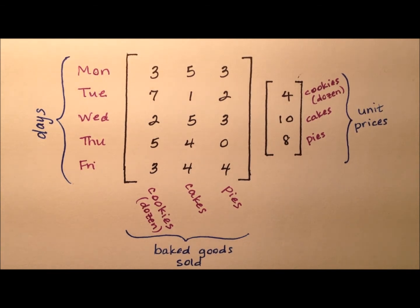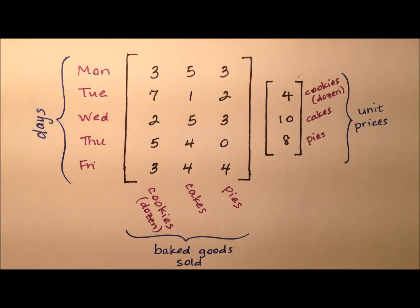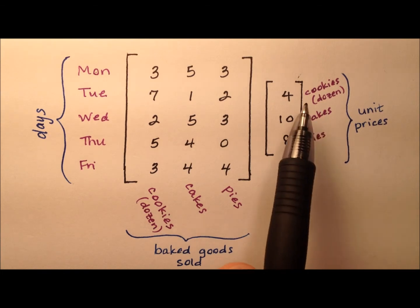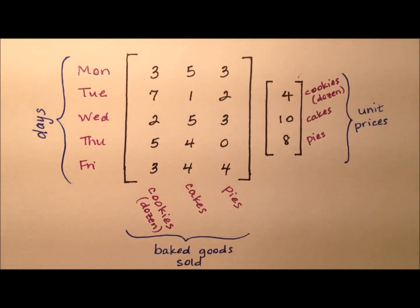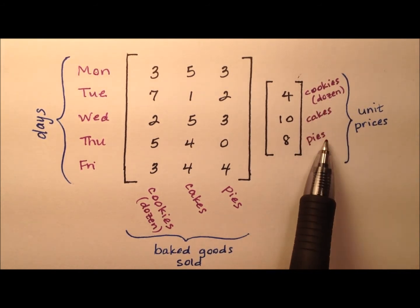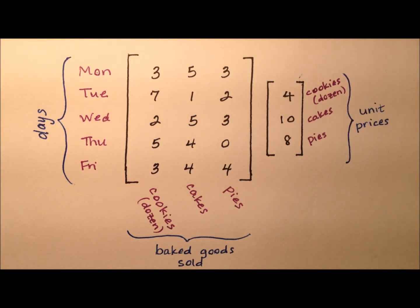We can take a look at using a second matrix, a column matrix, and this is going to store the unit price of each of these baked goods. So we see that the cookies here are $4, cakes are $10, and pies are $8. It's important to see that we keep them in the same order: cookies, cakes, pies. This is a very powerful matrix because its entries will drive the gross revenue that Julie gets from selling her baked goods.